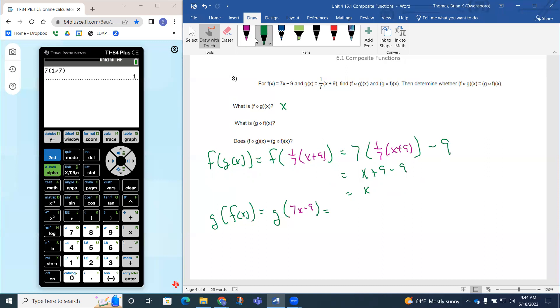So this becomes 1/7 times, and then the x gets replaced with the 7x plus 9.